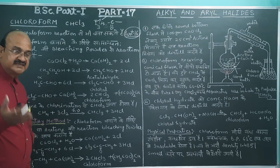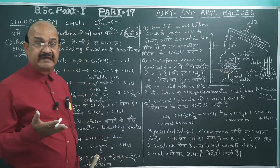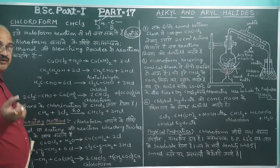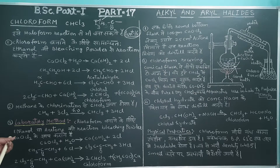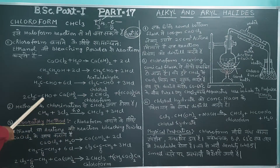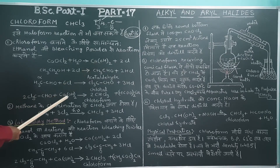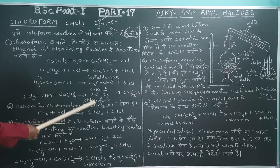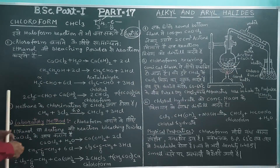Chloral is very hygroscopic. Just as in the rainy season, our edible common salt becomes wet because it absorbs moisture due to its hygroscopic nature — similarly chloral absorbs moisture. Now when this chlorine reacts with calcium hydroxide, the formation of chloroform takes place.